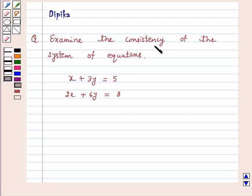Examine the consistency of the system of equations: x plus 3y is equal to 5, 2x plus 6y is equal to 8.